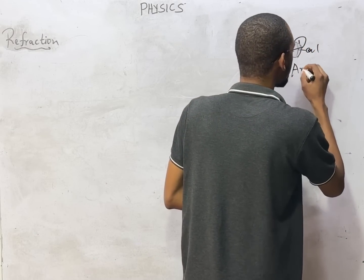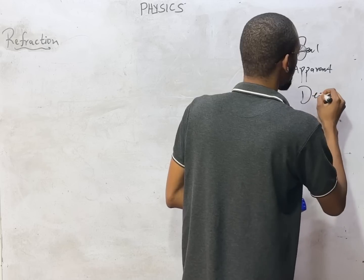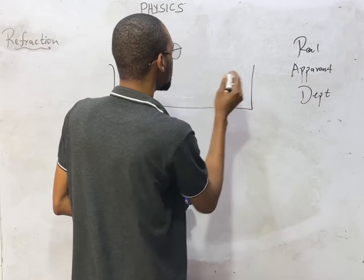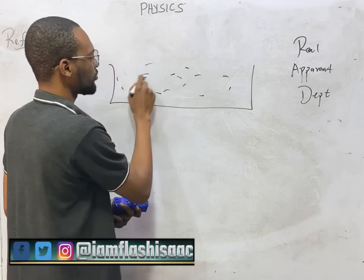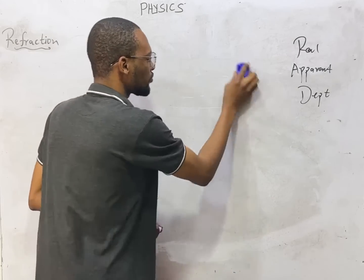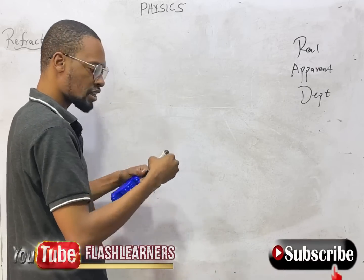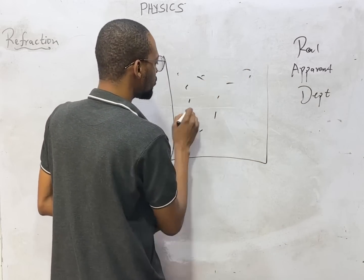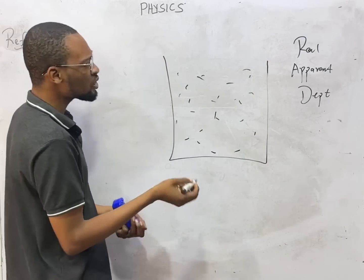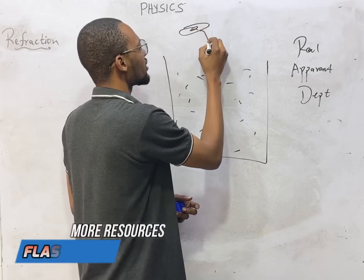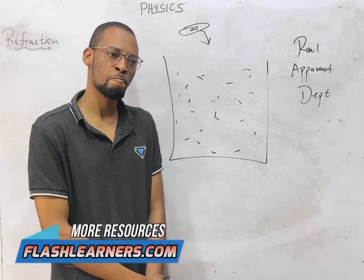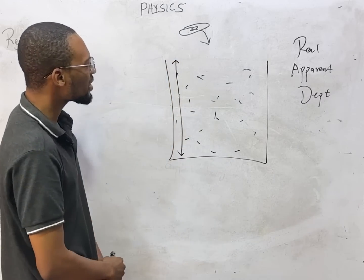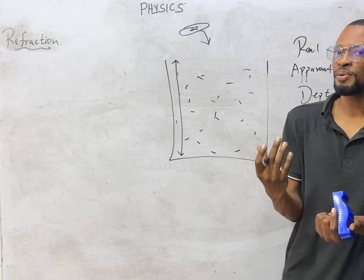We are looking at apparent depth. If this is a pool filled with water — let me draw it better — the depth of this pool is from here to here. But by the time you look at it from the top, it doesn't look as deep as it actually is.